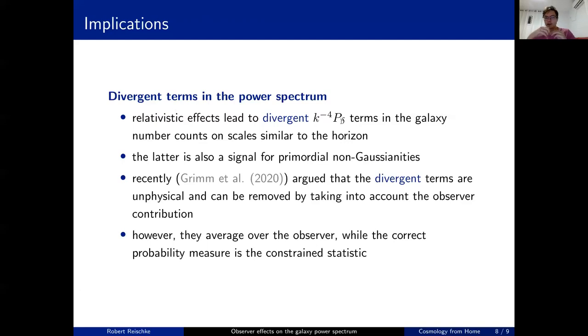Recently, as I mentioned, Grimm et al. argued that these divergent terms are not physical and that they can actually be removed by taking into account the contribution by the observer. However, what we think is that there's a small problem in the argument or how they treat the observer, because they average over all possible realizations at the observer. However, what you should use is the constraint statistic and not the unconstrained one, which basically gives you back the divergence on large scales.